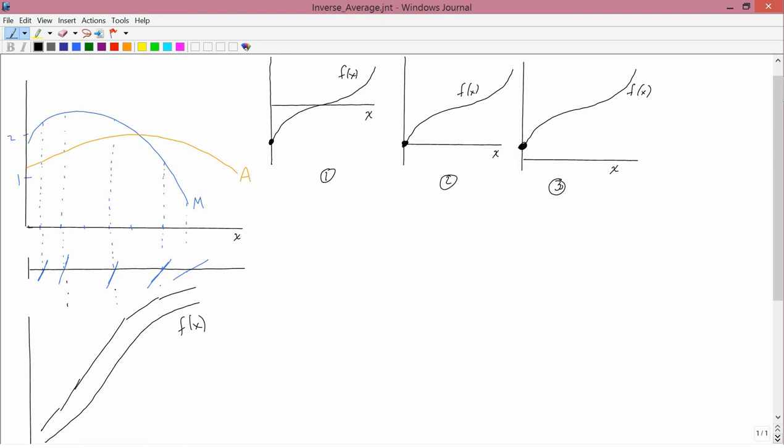If possibility 1 were correct, and we don't know whether it is or not, let's think about what the average would be at x equals 0. To get the average at x equals 0, we would draw a line from the function value to the origin and then ask, what is the slope of that line? The slope of that line is minus infinity. So if possibility 1 were correct, then the average at x equals 0 would be minus infinity.